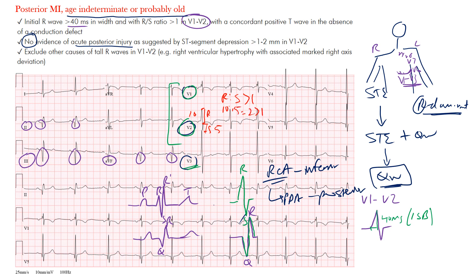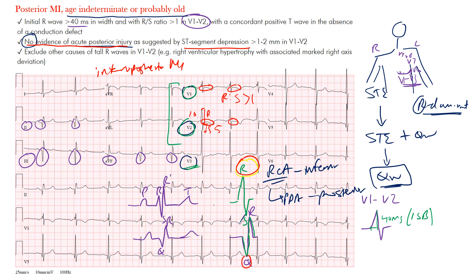For example, if the R wave is about 10 millimeters and the S wave is about 5, then R-to-S equals 2, which is greater than 1. So the R-to-S ratio is greater than one, the initial R wave width is 40 milliseconds or more, and you may see concordant T waves — though that's not always the case. The main thing is seeing the opposite changes representing posterior Q waves, and in the inferior leads confirming inferoposterior MI.